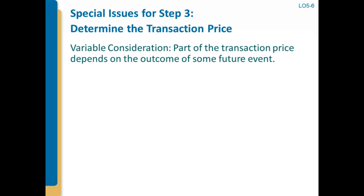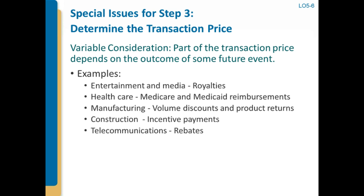What I want to do is drill down on this one topic: recognizing variable consideration. With variable consideration, what we're thinking about is that part of the transaction price depends on the outcome of some future event — a contingent loss or contingent gain situation. We're accustomed in revenue recognition to not recognizing revenue associated with contingent gains until the uncertainty resolves. Here we're going to be doing some things we're not used to doing — it's very judgmental, and there's concern this could open the door to earnings management.